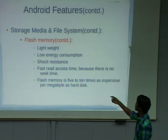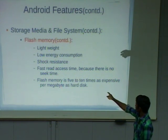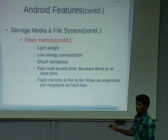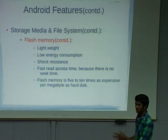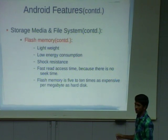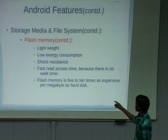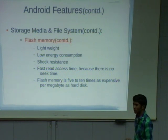Flash memory is lightweight and consumes low energy. The main advantage is fast read access time — there is no seek time, unlike hard disks where the cost is seek time plus rotation time. However, the drawback of flash memory is that to produce one megabyte of flash memory, it is 5 to 10 times more expensive than a hard disk.